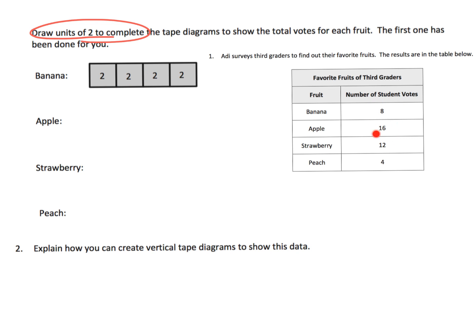Alright, so we have 16 students who liked apples. So what we need to do is we need to represent, here's a two. And how many of these twos do we need? Well two, four, six, eight.